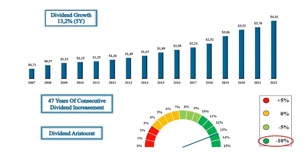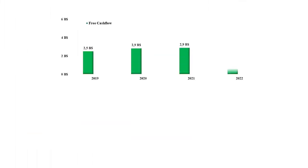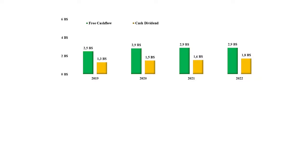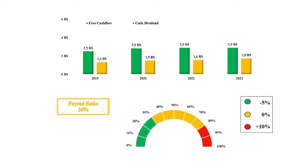If you want to investigate whether the dividend growth is sustainable, the payout ratio should be evaluated. I always look at the payout ratio with respect to the free cash flow, which is the cash the company has available after paying all necessary expenses. The free cash flow from ADP has increased from $2.5 billion in 2019 to $2.9 billion in 2022, and cash dividends were respectively $1.3 billion and $1.8 billion. The average payout ratio thereby becomes 56%, which is once again in the yellow section of our rating scale, giving no further adjustment to the margin of safety.